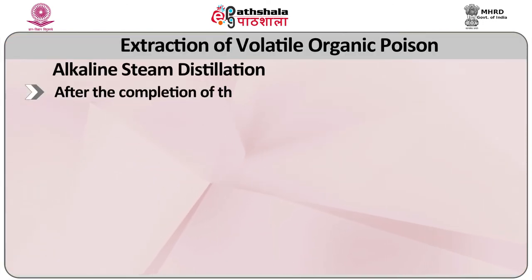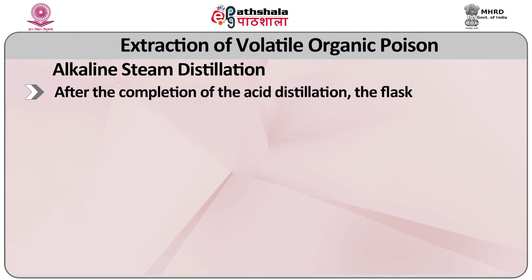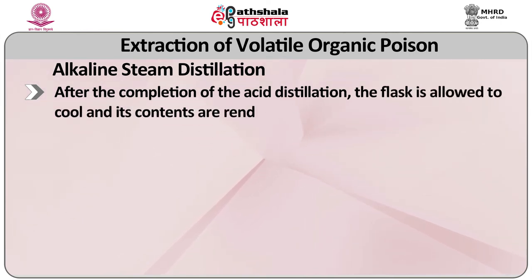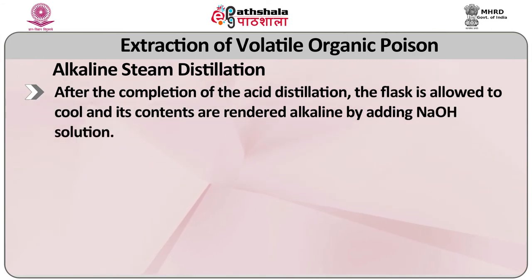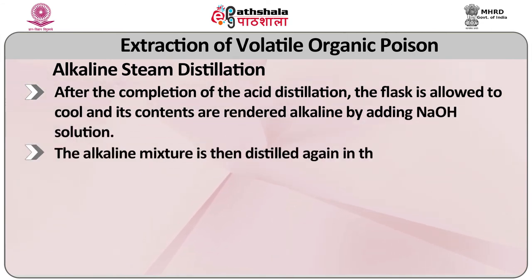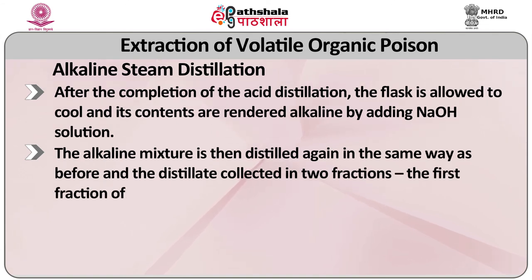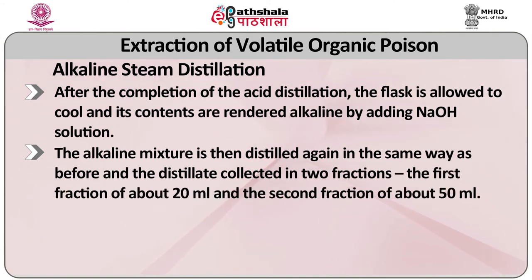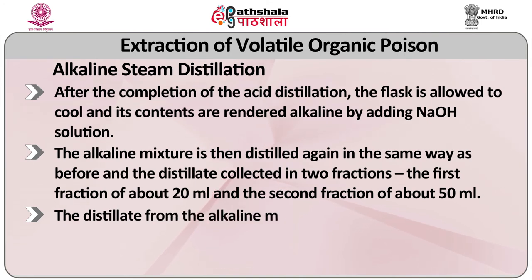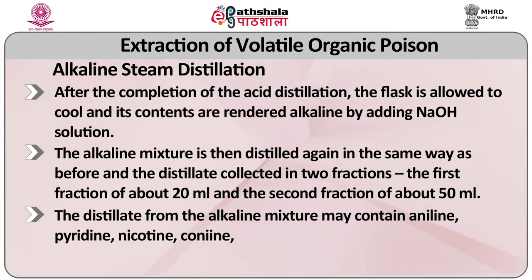The second method for extraction of volatile organic poisons is alkaline steam distillation. After completion of acid distillation, the flask is allowed to cool and its contents are rendered alkaline by adding sodium hydroxide solution. The alkaline mixture is then distilled again in the same way and the distillate collected in 2 fractions — the first of about 20 ml and the second of about 50 ml. The distillate from the alkaline mixture may contain aniline, pyridine, nicotine, conine, ammonia, and other volatile bases.